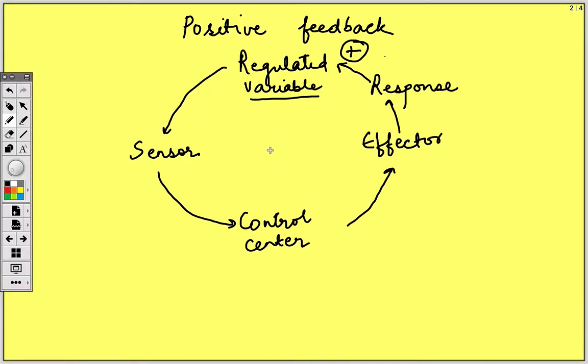Thus, when a desired value of variable is reached, the process is stopped. Let us take one example of milk ejection reflex.